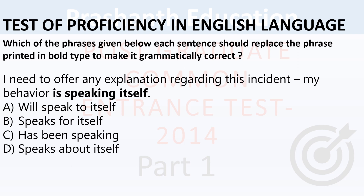Last question in the English proficiency section: 'I need to offer an explanation regarding this incident. My behavior is speaking itself.' 'Is speaking itself' is grammatically incorrect. Options: will speak to itself, speaks for itself, has been speaking, speaking about itself. 'Speaks for itself' is the correct phrase. Correct answer is B — speaks for itself.